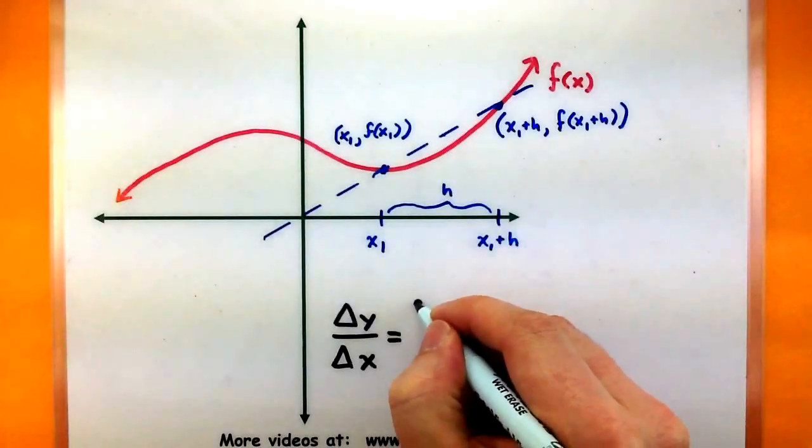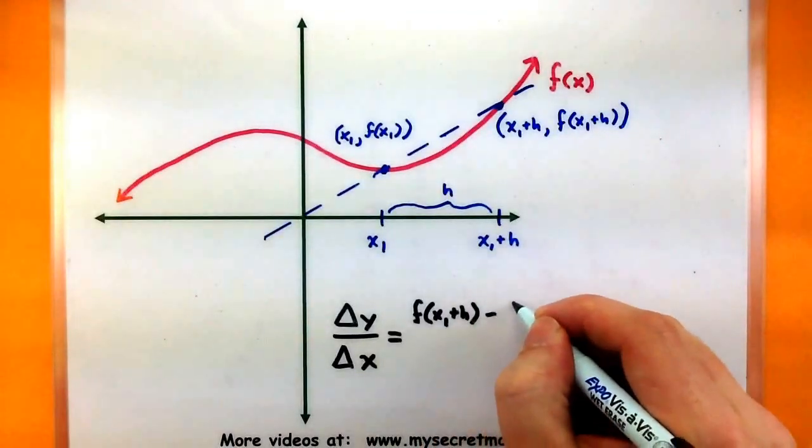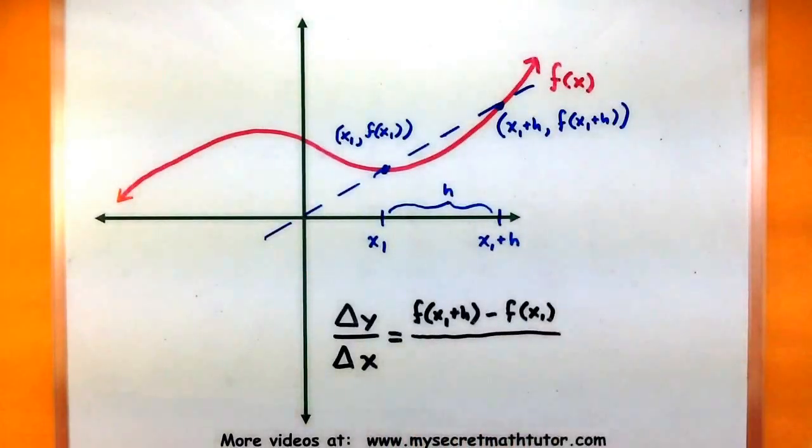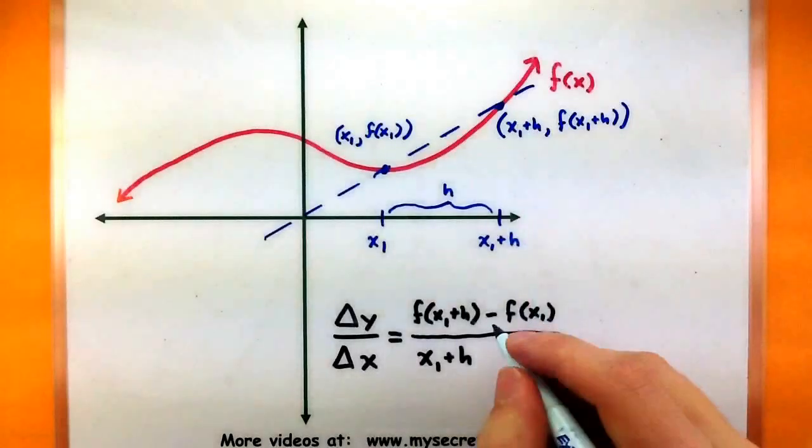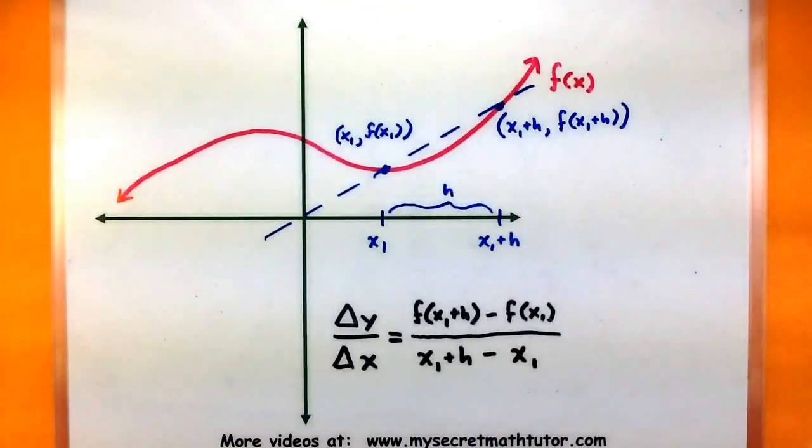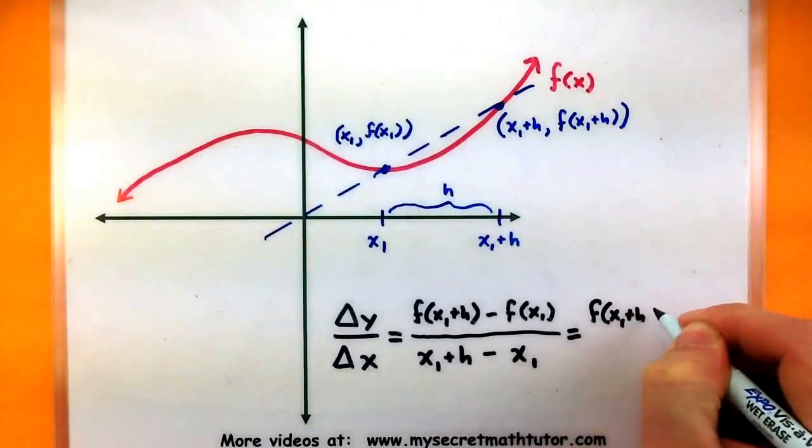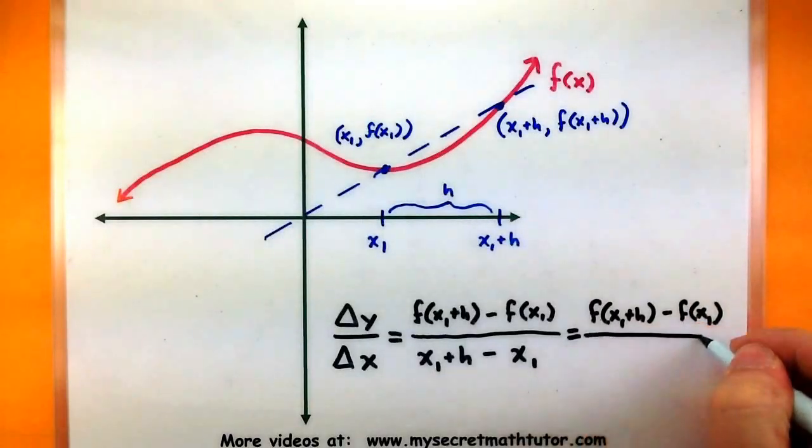So, like before, I'm going to subtract my y values. So I take my second y value, f of x1 plus h, and I subtract the first y value, f of x1, divided by, subtract the x values, so x1 plus h minus x1. So you can see this looks like what we did before, only I'm just using x1 and h to do it. Now, I can simplify this formula just a little bit by canceling out some extra x1's in the bottom. So, f of x1 plus h minus f of x1 all over h.